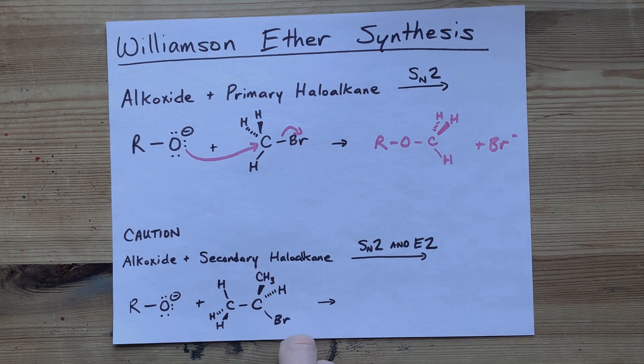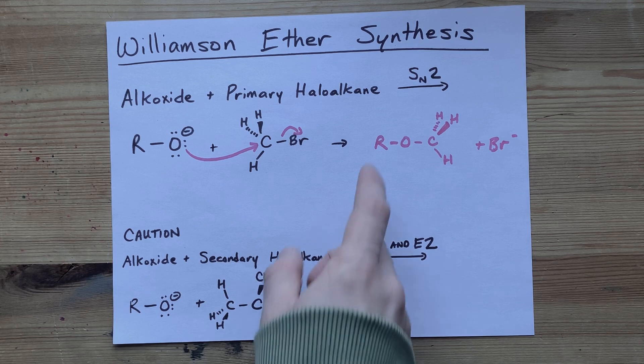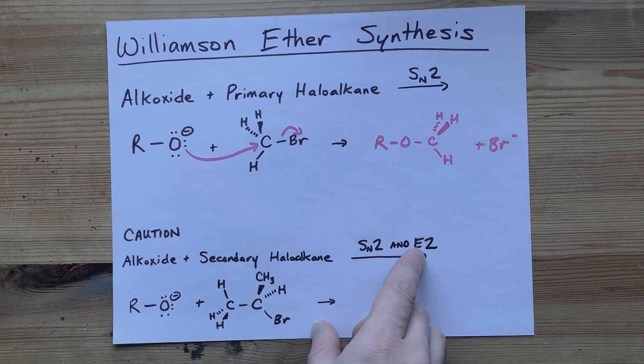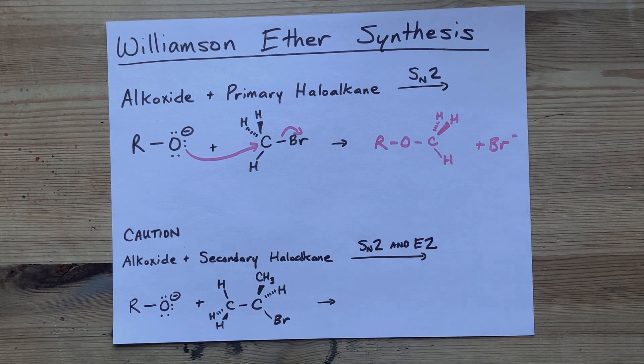As soon as you have a secondary haloalkane, you're going to get a mix of both SN2 reaction, which will give you this ether, but you'll also get some E2 or elimination reaction happening as well.